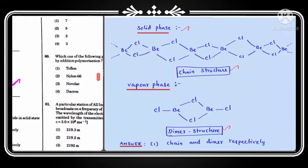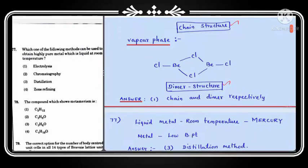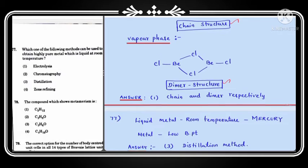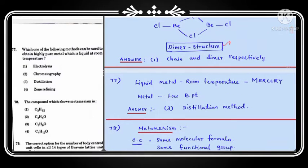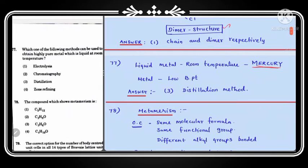Question number 77: which method can be used to obtain highly pure metal that is in liquid state at room temperature? The only liquid metal at room temperature is mercury. Mercury has a low boiling point, so we use the distillation method for its refining. Metals with low boiling points are refined by distillation; the correct answer is option 3.